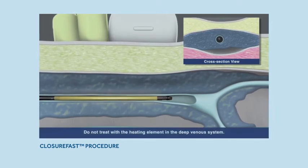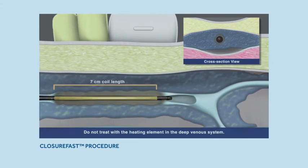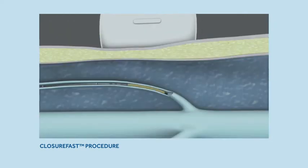The ClosureFAST procedure uses a segmental ablation technique which heats a seven centimeter vein length in one twenty-second interval. With the ClosureFAST three centimeter catheter, physicians can also treat shorter refluxing veins like the small saphenous vein.